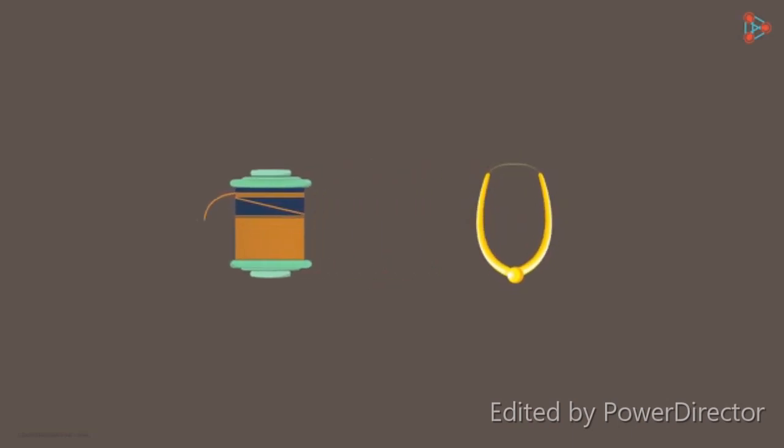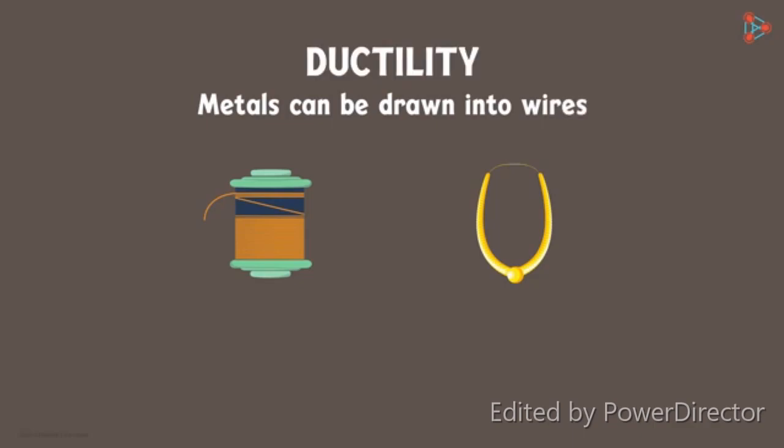Another property of metal is that they can also be drawn into wires, and this property is called ductility. A single gram of gold can be drawn into a 2 km long wire.